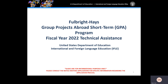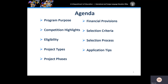Both webinars have been pre-recorded and can be accessed through the Department of Education's GPA website. The agenda for our technical assistance workshop is as follows: we will review the purpose of the GPA short-term program, review the competition highlights as referenced in the NIA, discuss the eligibility requirements for both applicants and participants, review each of the short-term project types, discuss each of the project phases, go over allowable cost, review the selection criteria and the process for selecting awardees, and provide some helpful tips for developing a competitive application.